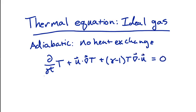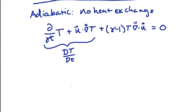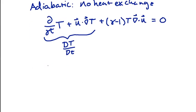This first set of terms here is the Lagrangian derivative of temperature, DT/Dt. And so we can write this in an alternative form, in a Lagrangian form, by saying DT/Dt, the Lagrangian derivative of T, is equal to minus (γ-1) times T times the divergence of u.